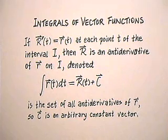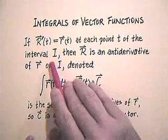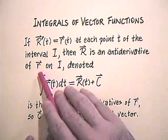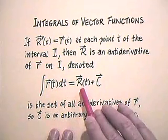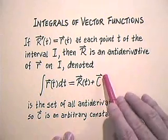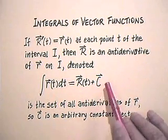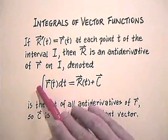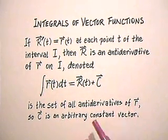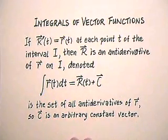Integrals of vector functions: if capital R prime at t equals little r of t at each point t of the interval I, then capital R is an antiderivative of little r on capital I, denoted ∫r(t)dt = R(t) + C, now a vector. In other words, the big capital C we attach after indefinite integration is now a vector constant — it is the set of all antiderivatives of little r. Capital C with the arrow is an arbitrary constant vector standing for all constant vectors.